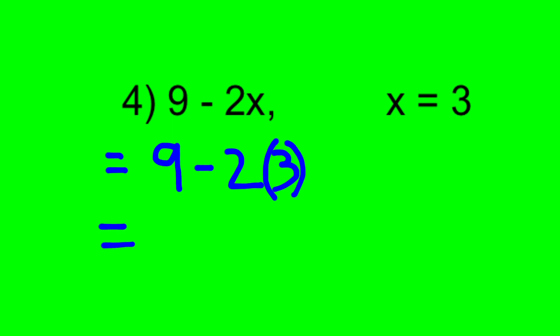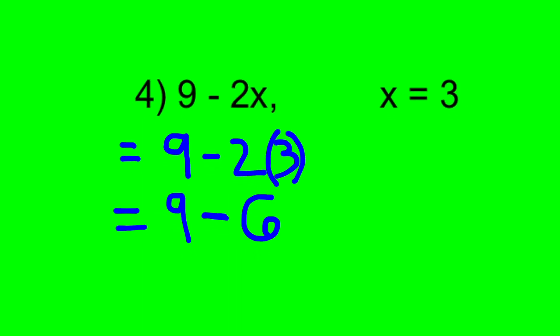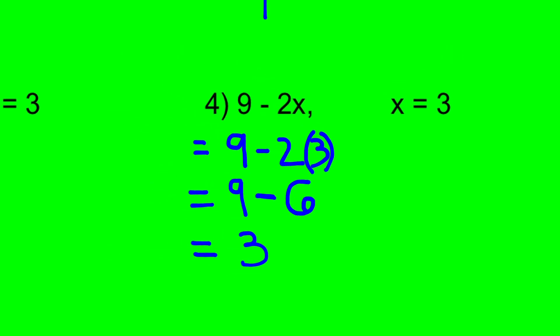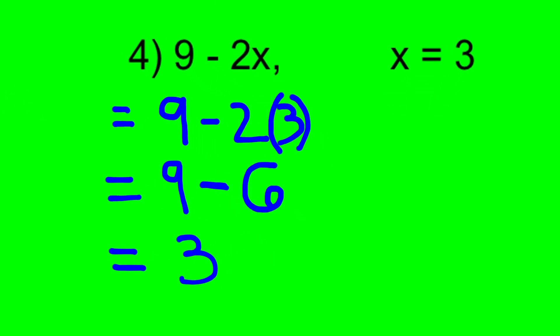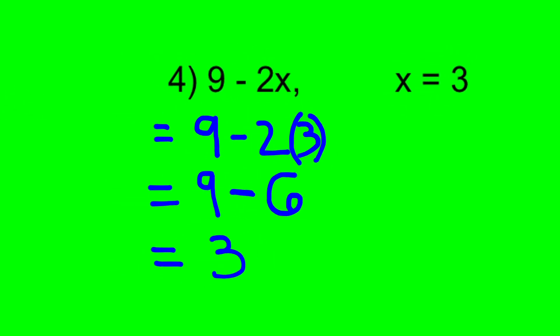Now remember, multiplication comes before subtraction. So I'm going to do 2 times 3 is 6, and I'm going to make sure I write that answer to 6. But answer of 6 right below the 2 times 3, I still have a minus sign. I still have a 9. So this is 9 - 6. And then working down the page still, 9 - 6 is equal to 3. So always multiplication before addition and subtraction.